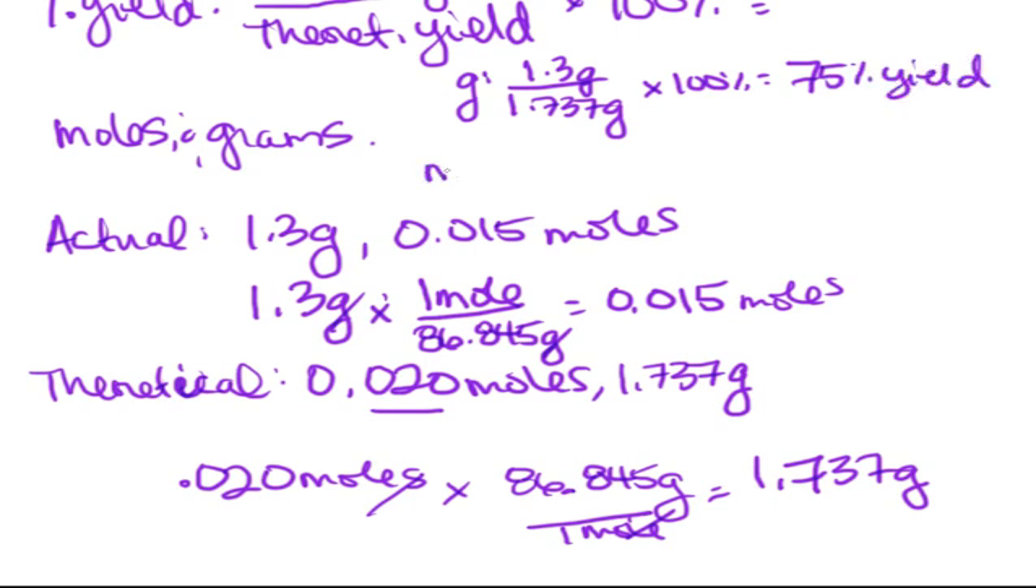You could check it by going the mole route, that would be our actual yield, which was 0.015 moles over 0.020 moles times 100%, and that will also give you 75% yield. So, that is the answer to part B, 75% yield.